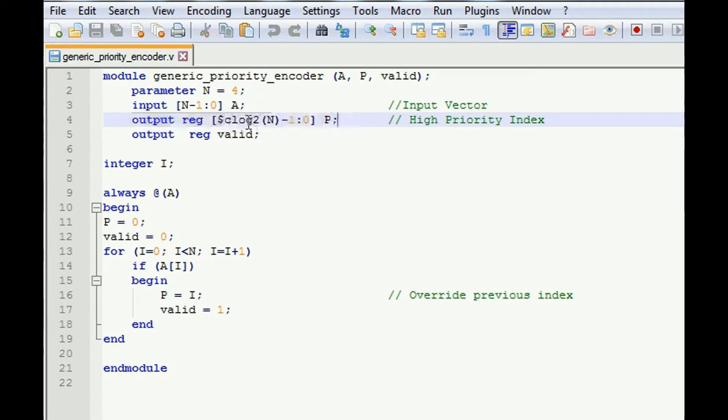And output will be clog2 n minus 1 colon 0. This is clog2, a system task. Clog2 of 4 will be 2, minus 1 will be 1 down to 0. That means 2 bits as an output, which indicates the high priority index.